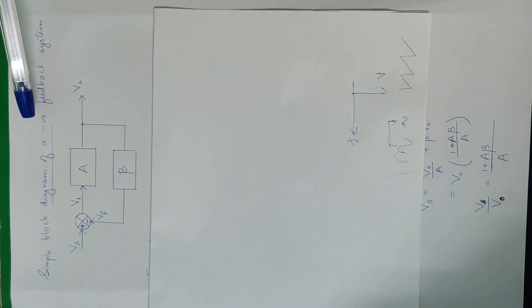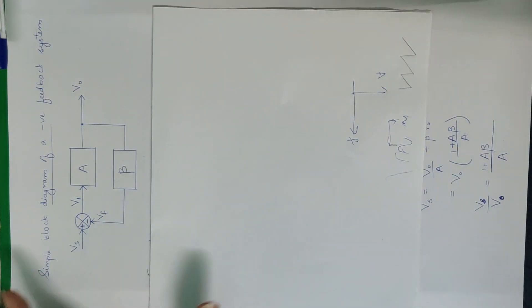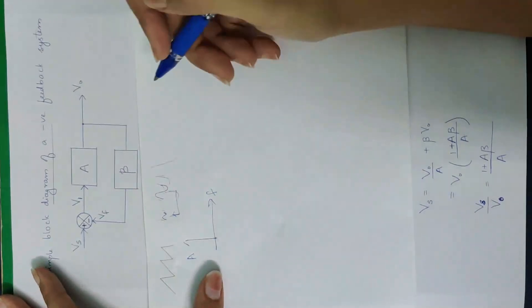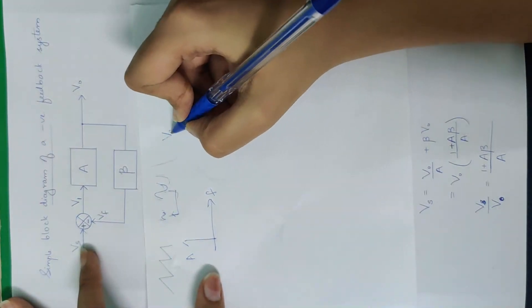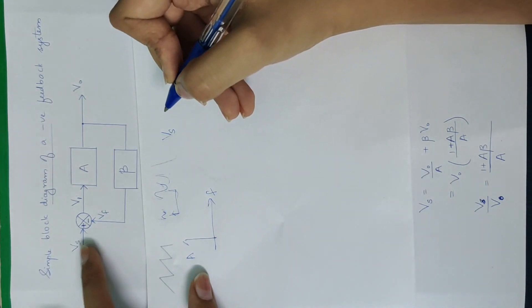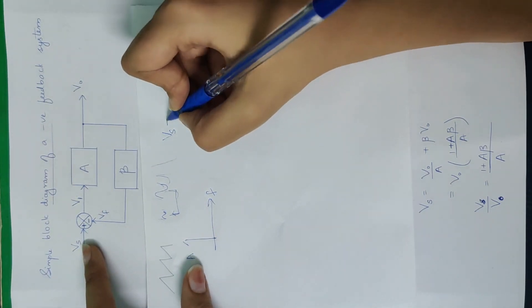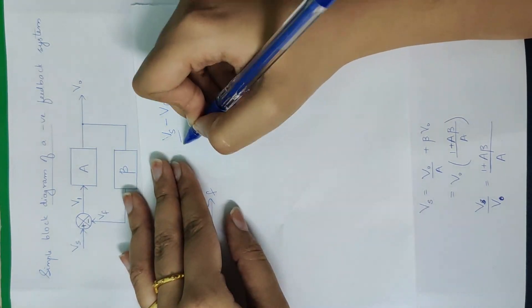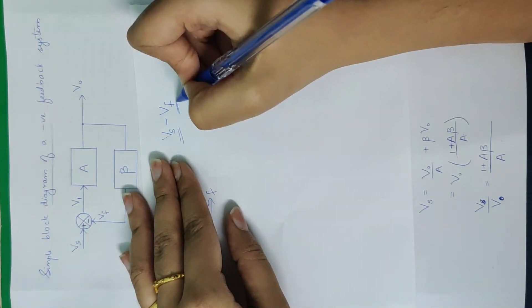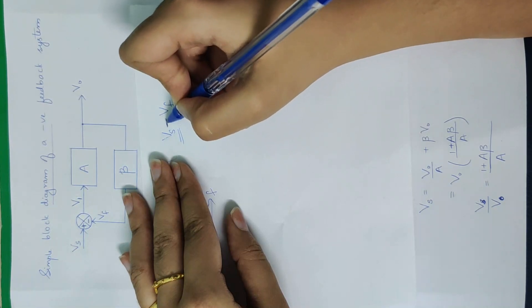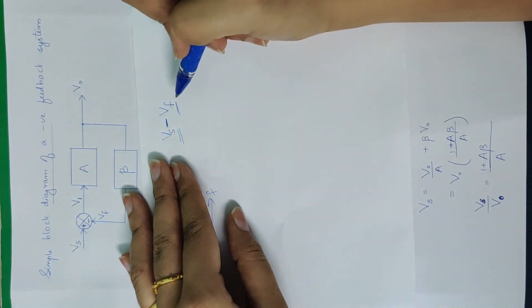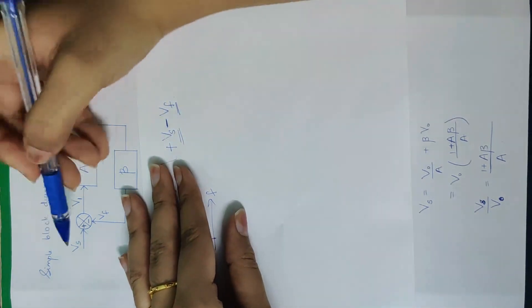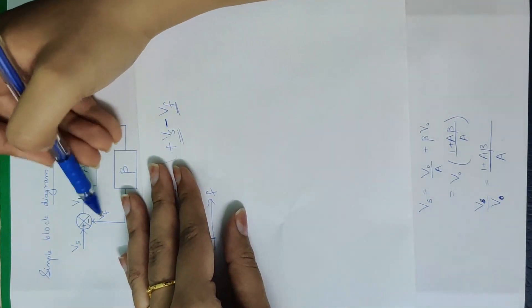Now we say negative feedback. When we use the input signal, we subtract VF from the total input signal. We subtract this feedback signal from the total input. That is negative feedback.